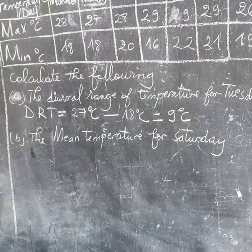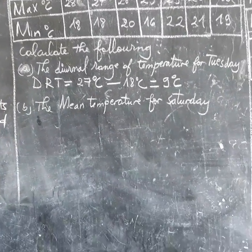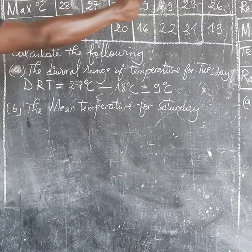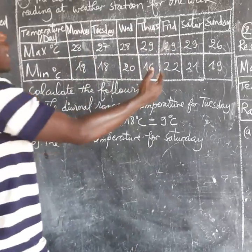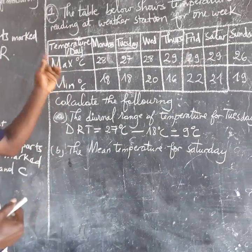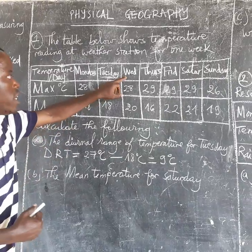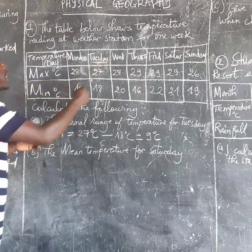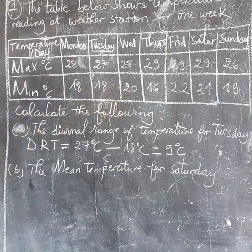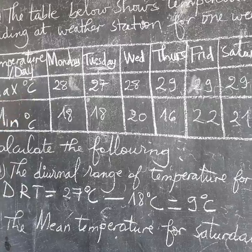So this is the general range of temperature for Tuesday. We can apply the same method for any day — Saturday, Monday, or Sunday. For example, if we are calculating the general range of temperature for Wednesday, we take 28°C (the maximum) minus 20°C (the minimum), and we get 8 degrees Celsius.